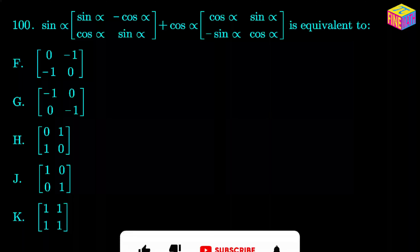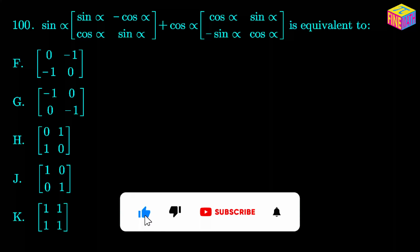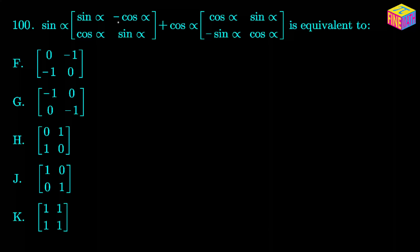Here in the question we have two matrices, each of them multiplied by a trigonometric ratio, and then a sum has been taken. It's sin(α) times the first matrix — [sin(α), -cos(α); cos(α), sin(α)] — plus cos(α) times the second matrix — [cos(α), sin(α); -sin(α), cos(α)]. Since the original matrices are 2×2 matrices, the result matrix will also be a 2×2 matrix.